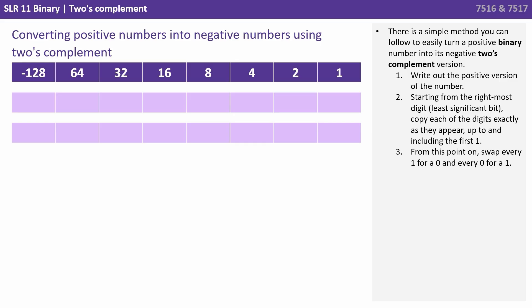Two, starting from the rightmost digit, the least significant bit, copy each of the digits exactly as they appear up to and including the first one.